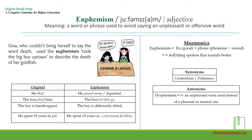Mnemonics: in order to remember the word euphemism, we can break it apart as 'eu,' which is good, and 'phone,' which can be similar to phoneme or sound. So euphemism can be remembered as anything spoken that sounds better. Synonyms for the word euphemism can be gentilism, politeness. Antonyms for the word euphemism can be dysphemism, which is an unpleasant term used instead of a pleasant or neutral one.